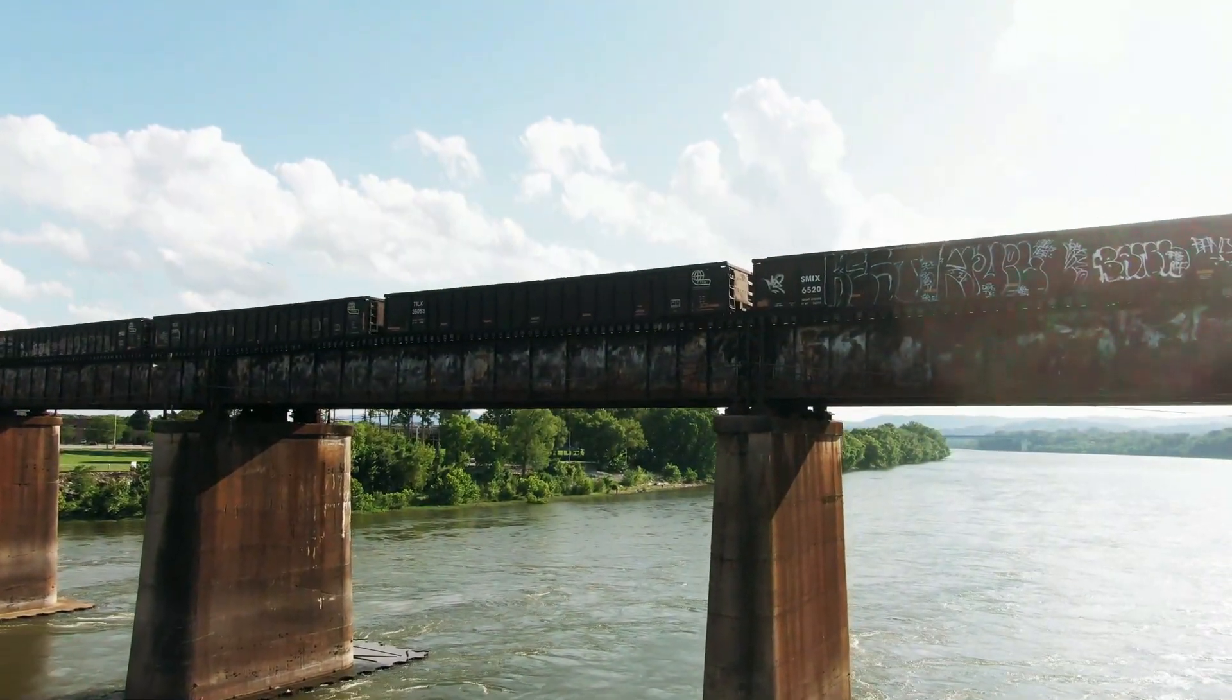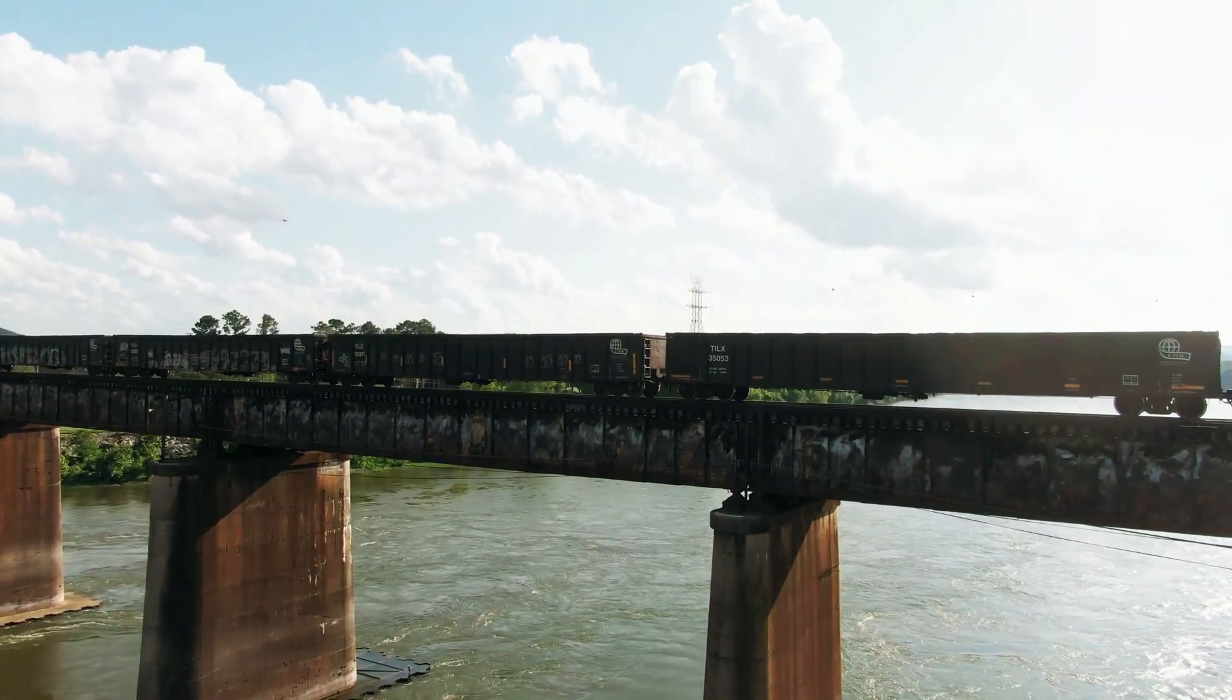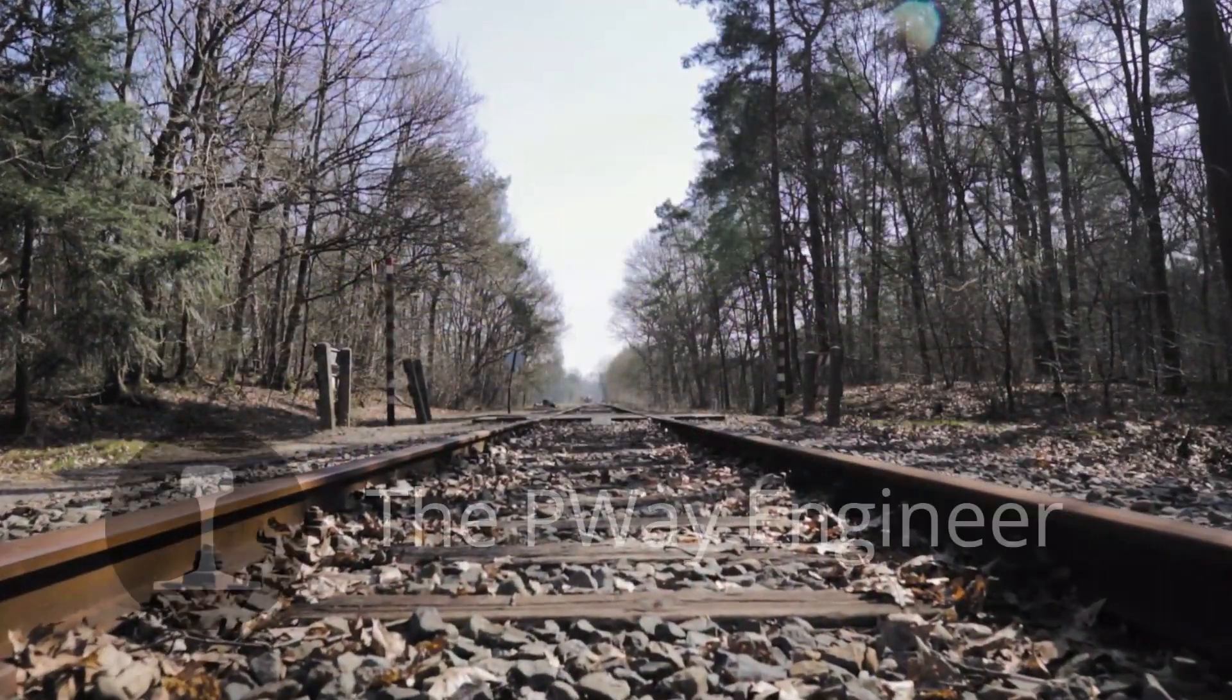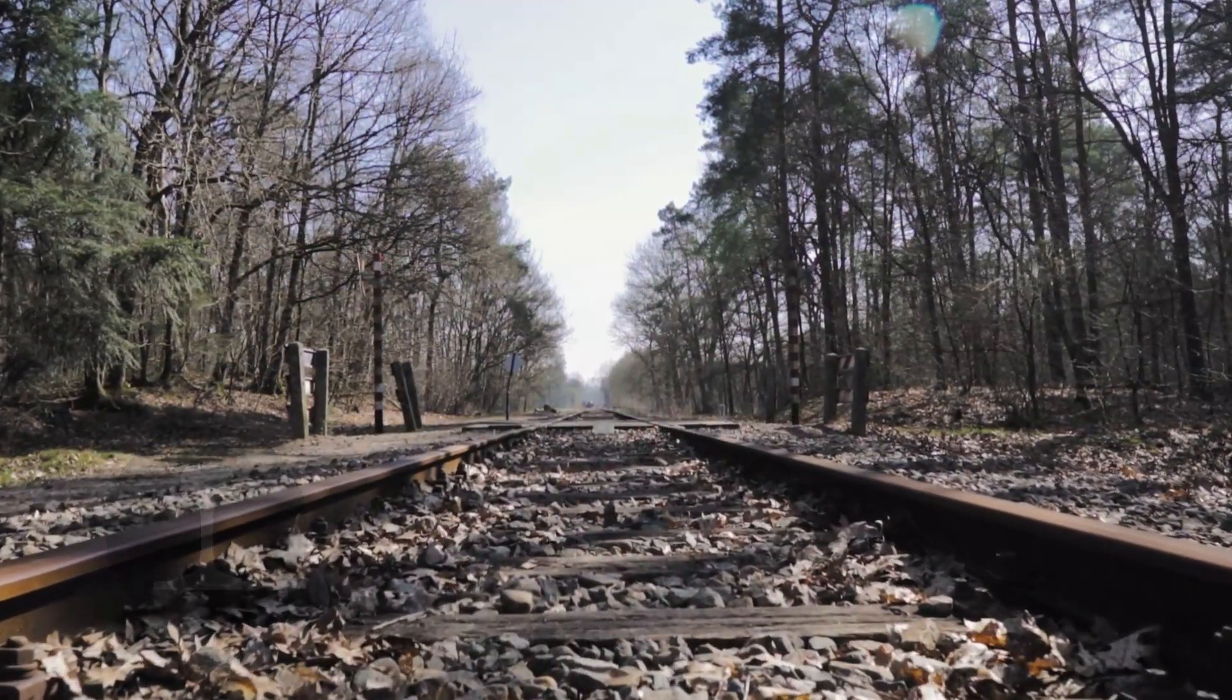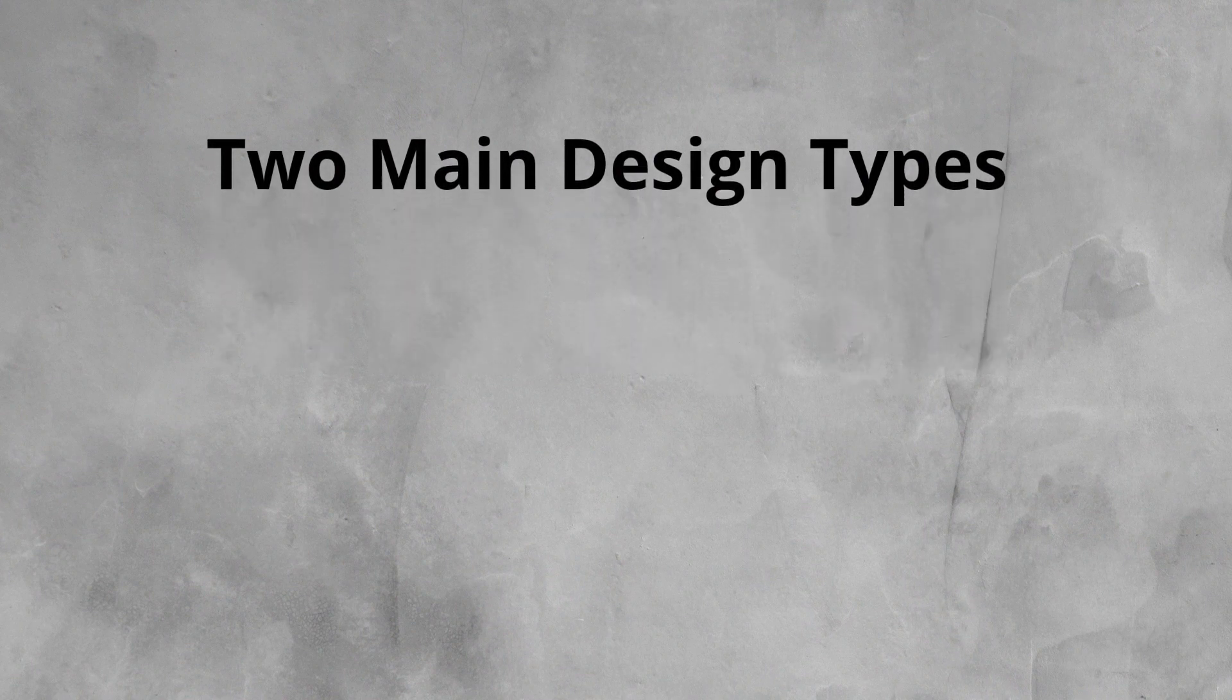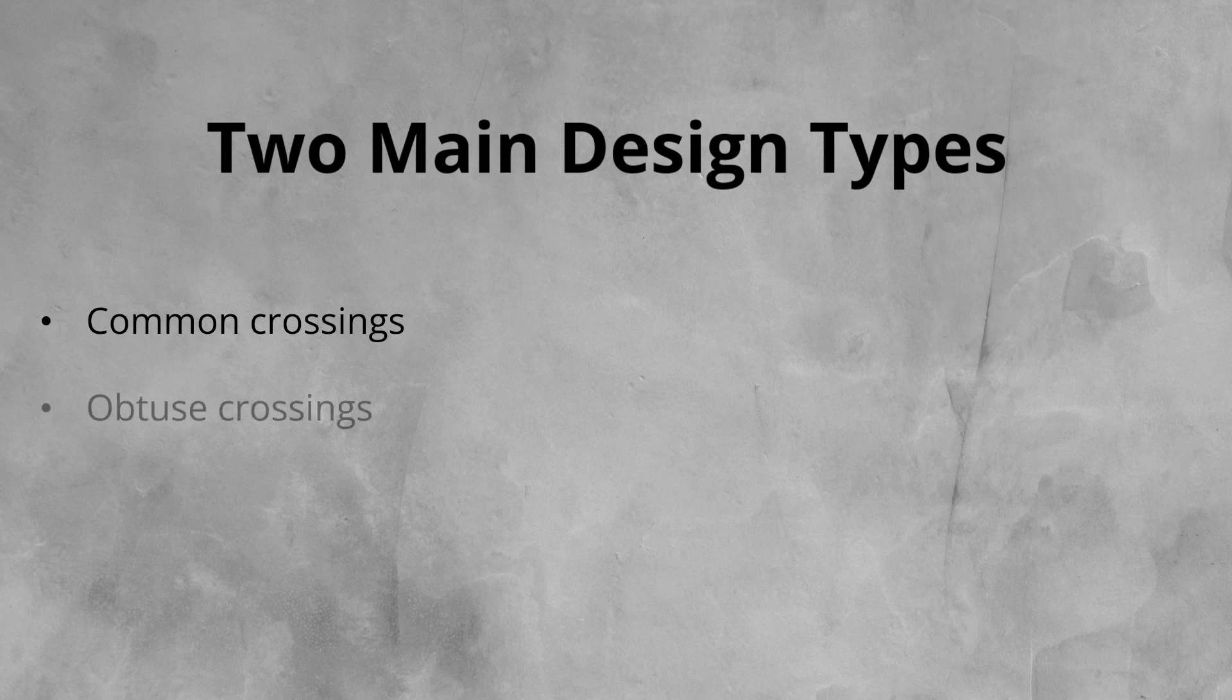Now that you know what to expect from this video, let's dive into the differences between common and obtuse railway crossings. Crossings fall into two design types: common and obtuse. It is important to be able to tell the difference between the two.